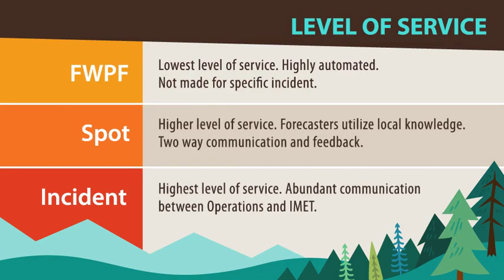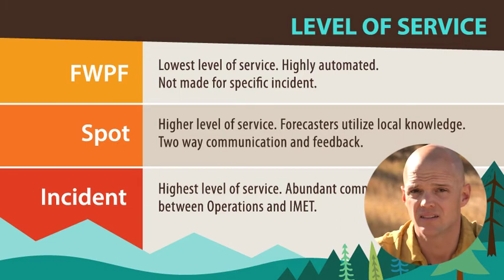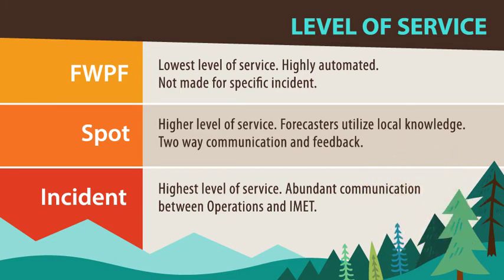Each forecast type has a distinct level of service — the amount of dialogue you should be able to have with your forecast. The fire weather planning forecast is a highly automated procedure resulting in a low level of service. The spot forecast has a higher level of service because forecasters know your location and have knowledge of local terrain; if a critical update is needed, they will provide a written update followed by verbal confirmation. The incident forecast has the highest level of service because the IMET is on scene and able to communicate in person or over the radio. Two-way communication is key when working with an IMET or NWS forecaster, as they will produce a better product when given your fireline observations.